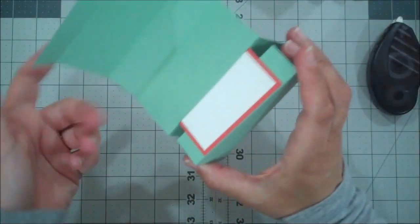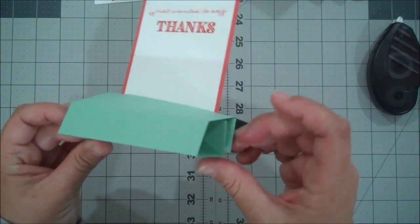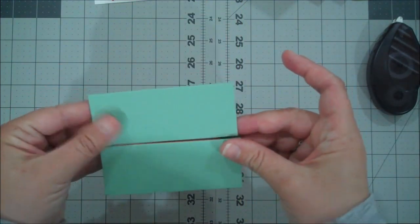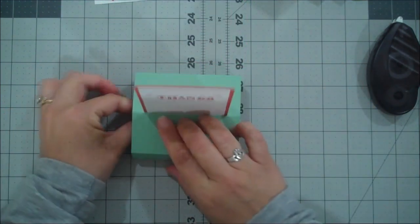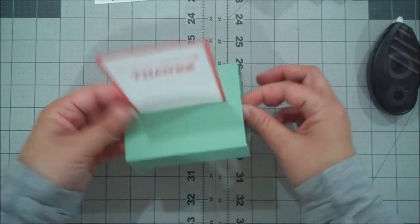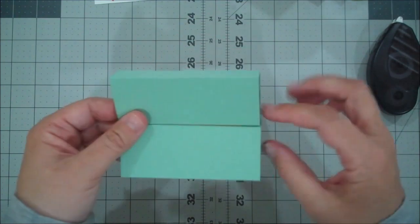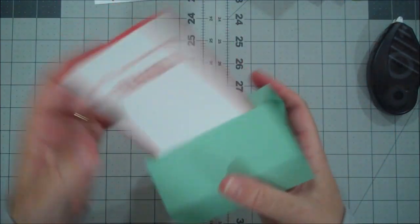So we just need adhesive now on this flap here. And I would use, you know, a stronger adhesive. You can use your tear and tape if you'd like. I'm just going to line this up. Give that a nice press in there with my fingers.